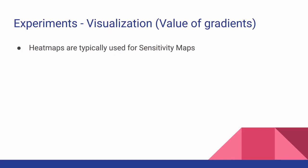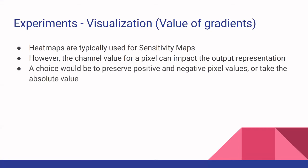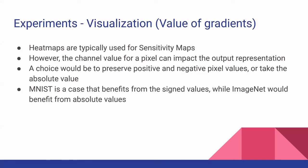To design their sensitivity maps, the researchers discussed three visualization techniques. The first is absolute value. The researchers found that the channel values for a pixel can impact the output representation — gradients could be positive or negative. They had a choice whether to preserve the sign values or take the absolute value, and found this to be very much dependent on the dataset. For MNIST, it was beneficial to keep the sign values, while with ImageNet it was better to take absolute values.